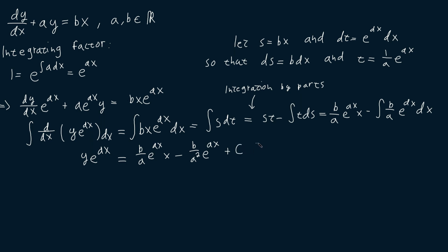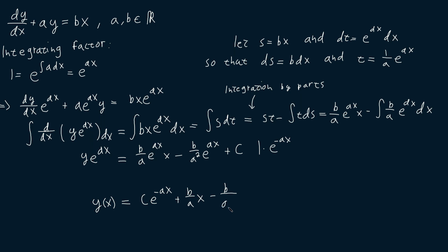Then let's multiply both sides of the equation by e to the minus ax to get our y of x. It is equal to c times e to the minus ax, plus b over a times x minus b over a squared. And this here is our final result.